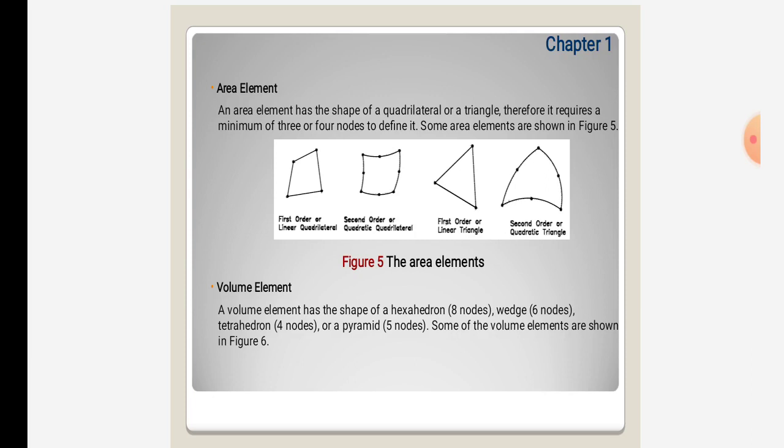Volume elements have the shape of a hexahedron with 8 nodes, wedge with 6 nodes, tetrahedron with 4 nodes, or pyramid with 5 nodes. Some of the volume elements are shown in Figure 6.